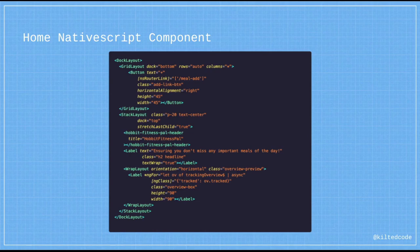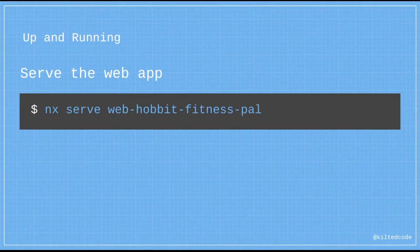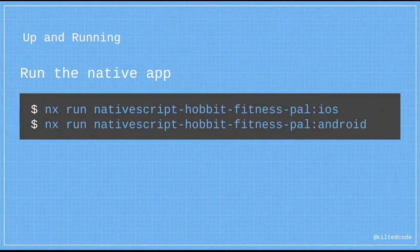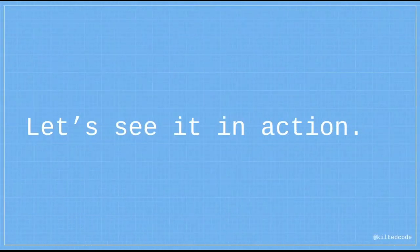Getting things running is quite easy. To run the web app, just run nx serve with the name of the app. To run the native app, use nx run with the app name, a colon, and the platform — iOS or Android — and it will bring the app up.